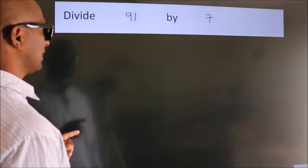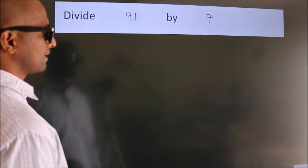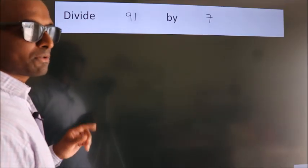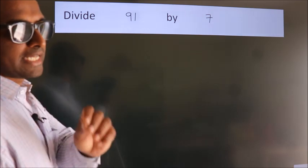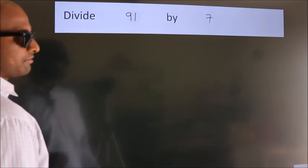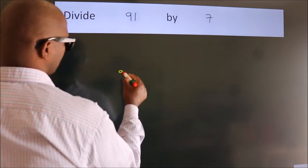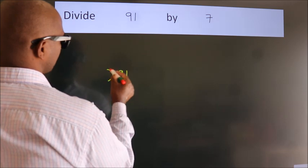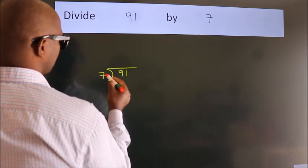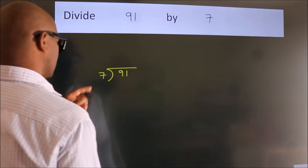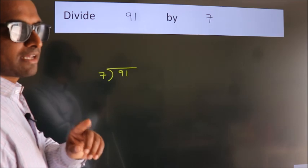Divide 91 by 7. To do this division, we should frame it in this way: 91 here, 7 here. This is your step 1.